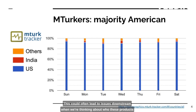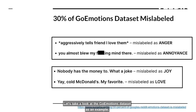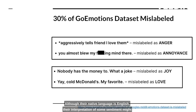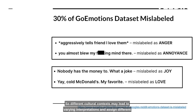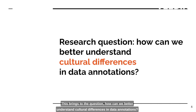This could often lead to issues downstream when we're thinking about who these products are actually trying to serve. Let's take a look at the Go Emotions dataset as an example. The majority of the ghost workers labeling this dataset about emotions are from India. Although their native language is English, their interpretation of some sentiment might be different from those in American English, especially internet slang. So different cultural contexts may lead to varying interpretations and assign different labels than what might be typically expected. This brings to the question: how can we better understand cultural differences in data annotations?